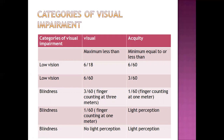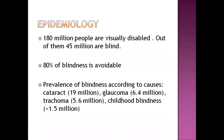Blindness can be prevented, managed, and treated on time, but early detection is important. 180 million people in the world are visually disabled; out of them, 45 million are blind, where 80 percent of blindness is avoidable. Prevalence of blindness by cause is highest for cataract at 19 million, followed by glaucoma at 6.4 million, then trachoma and childhood blindness at greater than 1.5 million.